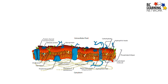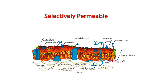The cell membrane is a thin, selectively permeable membrane that surrounds the cytoplasm of a cell. Its main function is to protect the integrity of the interior of the cell, controlling the movement of substances into and out of the cell. It also serves to help support the cell and maintain its shape.